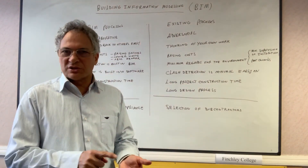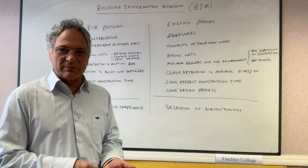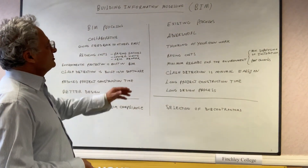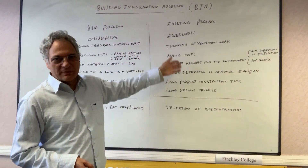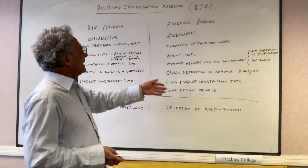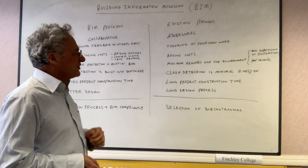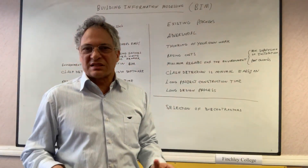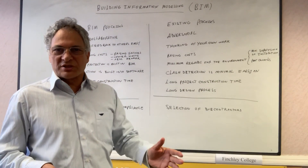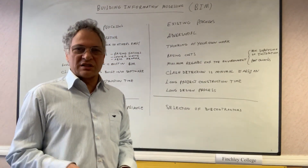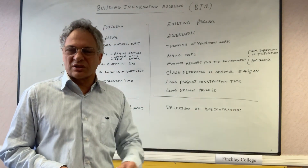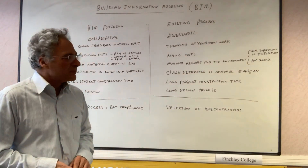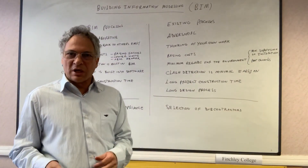That efficiency is going to bring us reduction in cost, reduction in time, and a better product. First, we'll look at existing processes — how work is done in the existing way — and then we'll look at the BIM process. An existing process is generally adversarial, meaning contractors try to make more money from the client, the client tries to pay less, and generally everybody is mainly money-orientated.